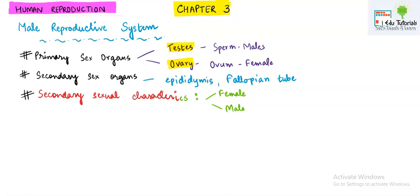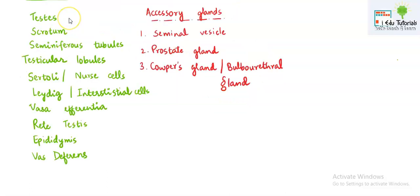Now we are moving ahead to the male reproductive system. Please go through all these terms: testes, scrotum, seminiferous tubules, testicular lobules, Sertoli or nurse cells, Leydig or interstitial cells, vasa efferentia, rete testes, epididymis, vas deferens, and the accessory glands — seminal vesicle, prostate gland, and Cowper's gland, also known as bulbourethral gland.